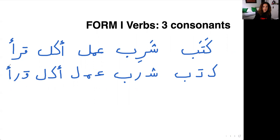The hamza is considered a consonant and is part of the root, unlike the short vowels — the fatha, damma, kasra — these are not part of the root. The meanings of these verbs: katab means to write, shirib means to drink, amal means to do — in Levantine Arabic, be careful: amal means 'to do', not 'to work' (in Fusha it means to work) — akal means to eat, and qara or iri means to read.